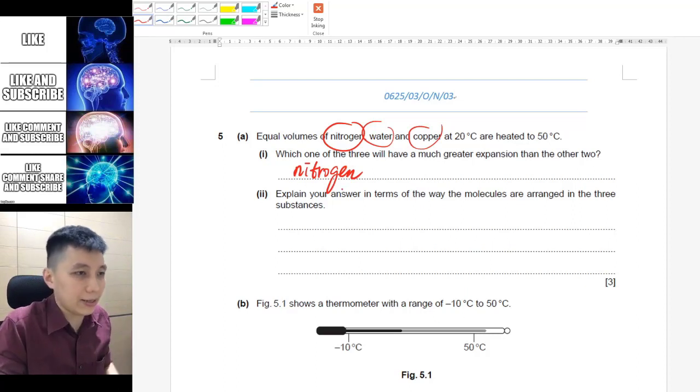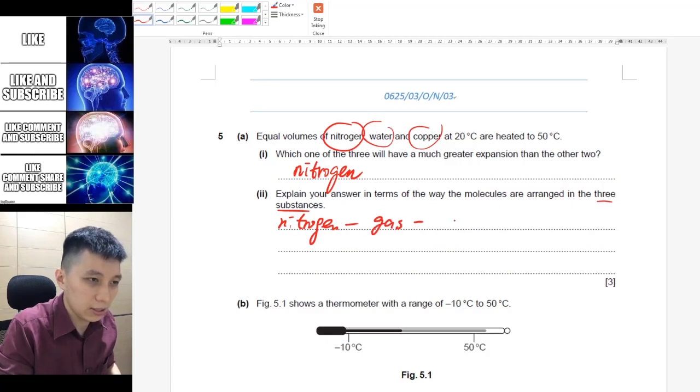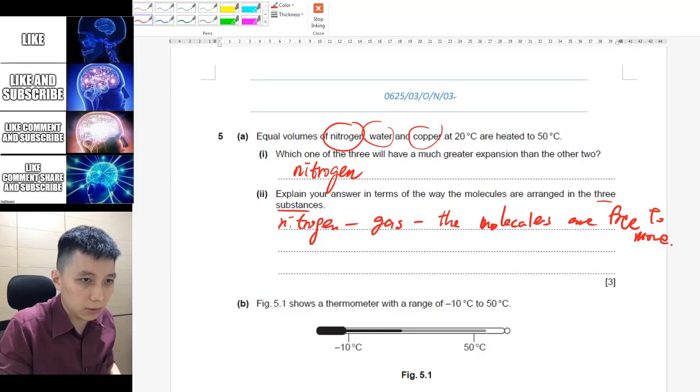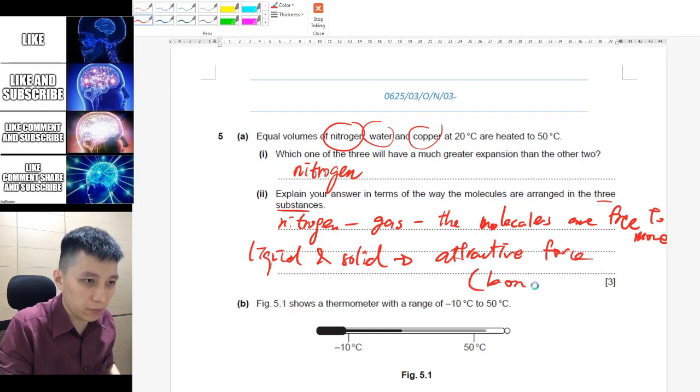Part two asks you to explain why, in terms of how the molecules are arranged. So you need to go through all three substances. Apparently you can see that nitrogen, which is gas, the molecules are free to move. While for the other two, which is liquid and solid, then you can see that their molecules are experiencing attractive force, or you can use the word bonding. There's bonding between liquid and solid, and therefore they are not expanding as much.